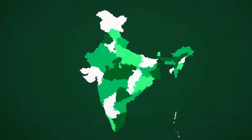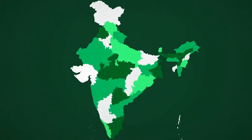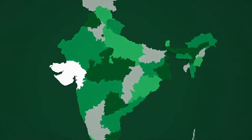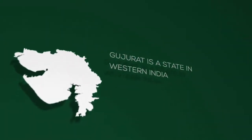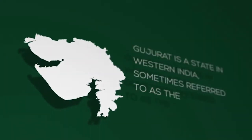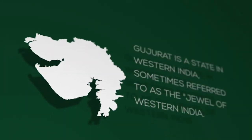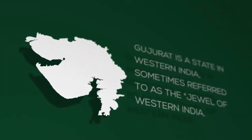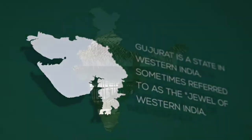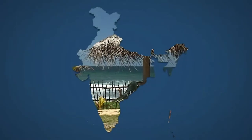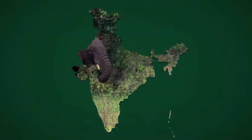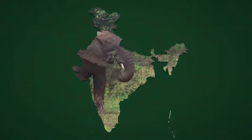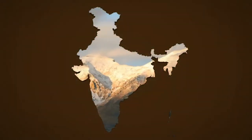Zoom in to areas of interest and hide the layers you don't need to focus on certain states. Animate individual states and add your own text and camera moves as required. Use your own content as a texture for the country map,